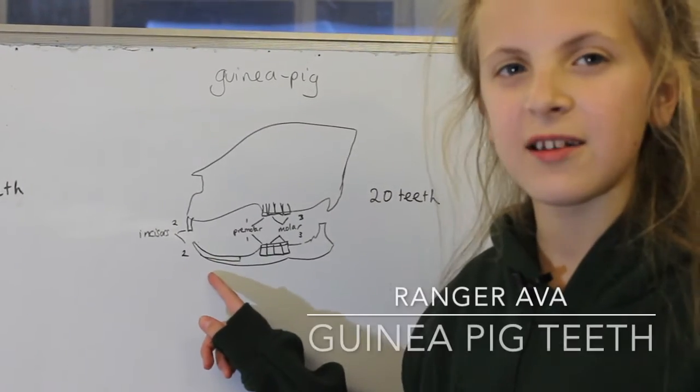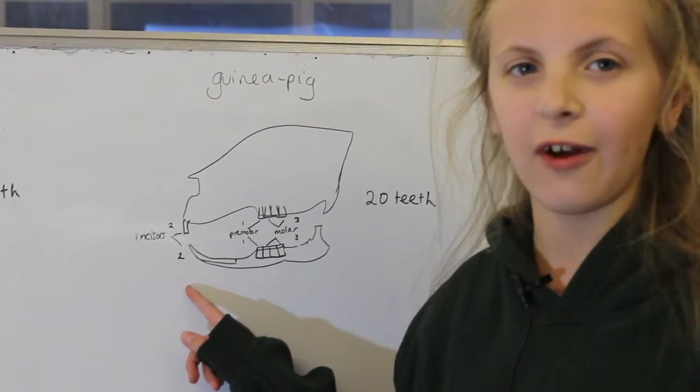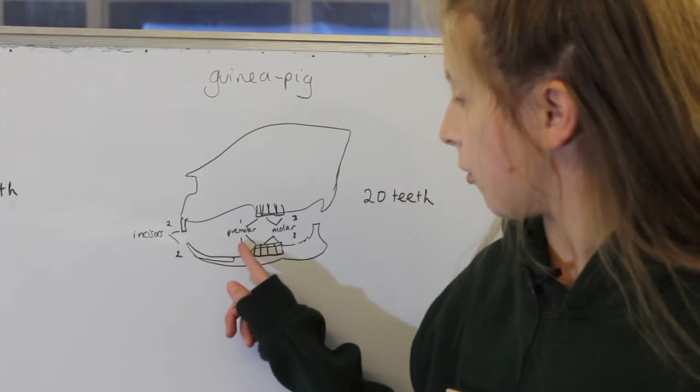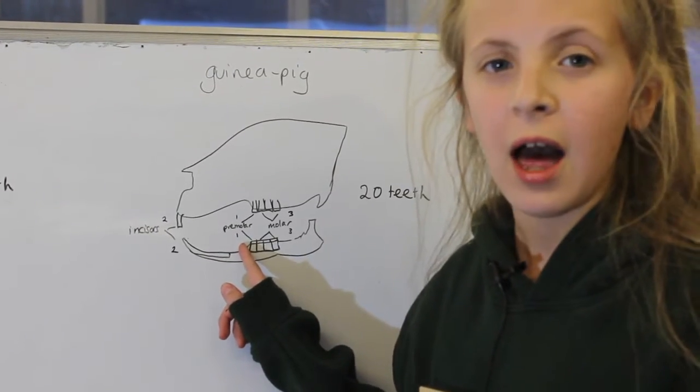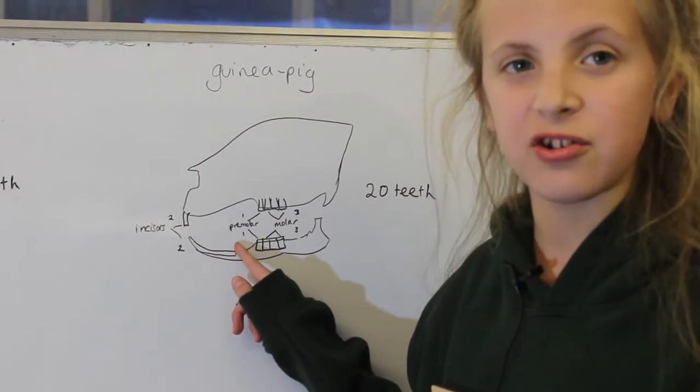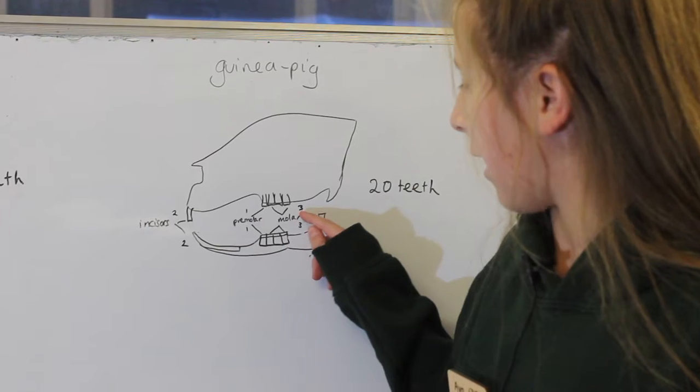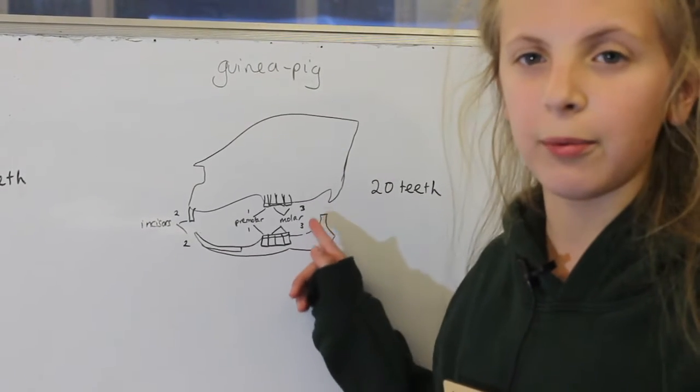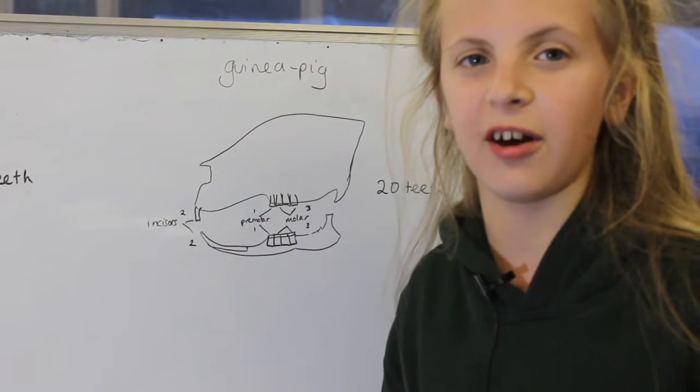Guinea pigs have two incisors at the top and bottom at the front of their mouth. One premolar at the top and bottom of their mouth, each side of their mouth. And three molars at the top and bottom of their mouth and on each side.